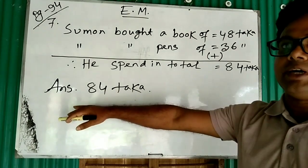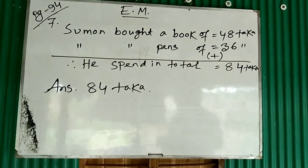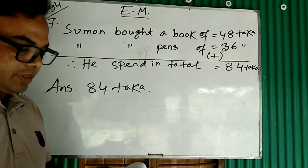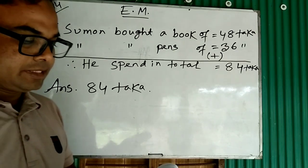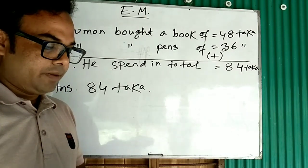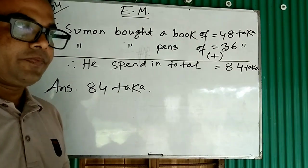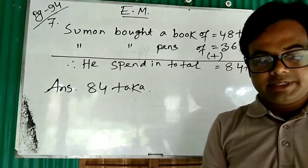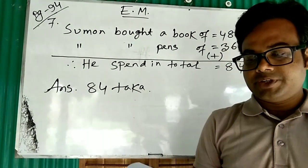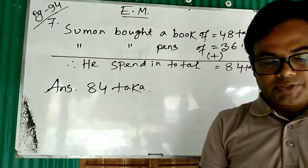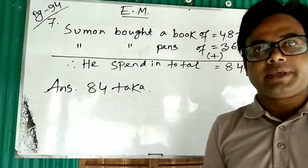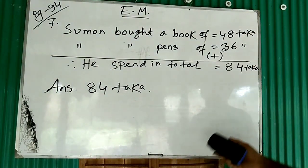There were two items - one is book, another is pens. Total cost, plus sign, 8 plus 6 equals 14, carry 1, 5 plus 3 equals 8, answer 84. Now the next question is number 8: Shabita has been reading a book. If she reads six pages in a day, how many pages will she read in one week? Read the question again.